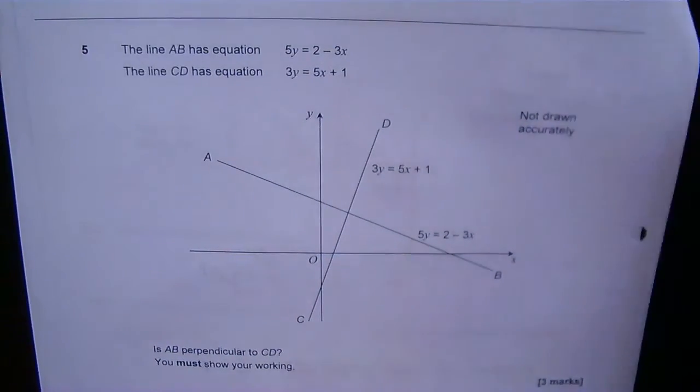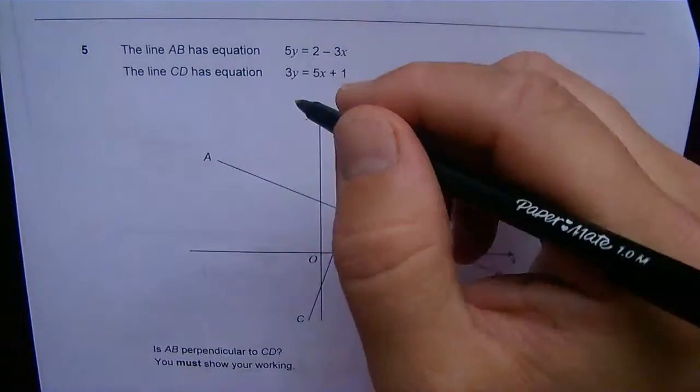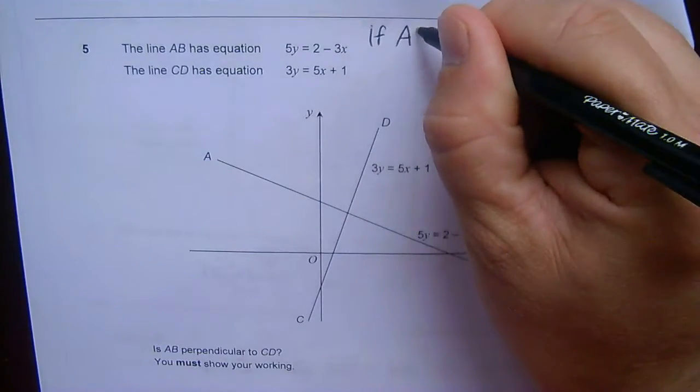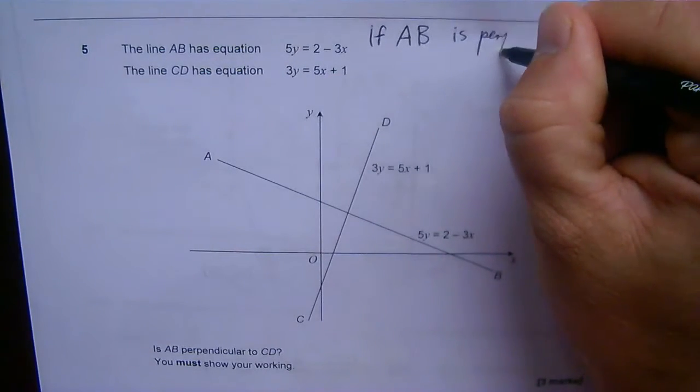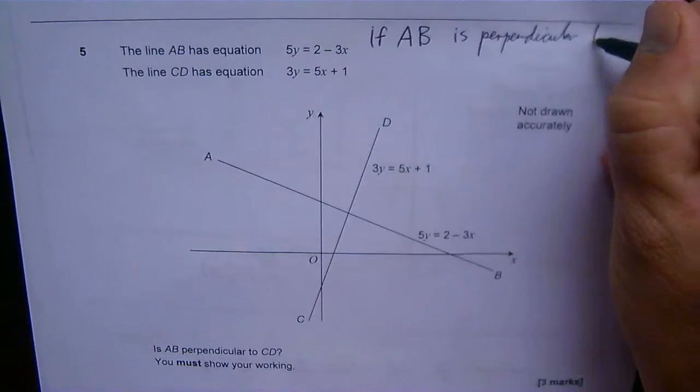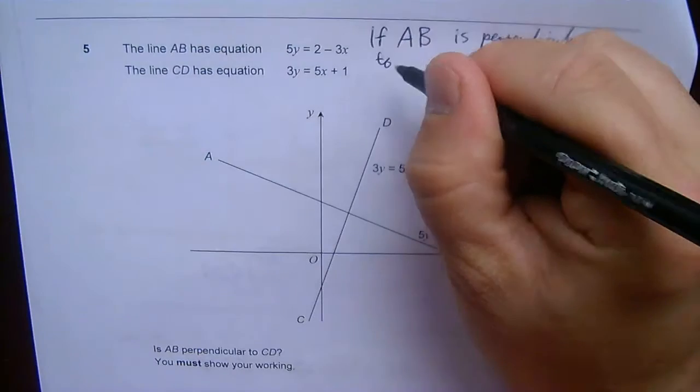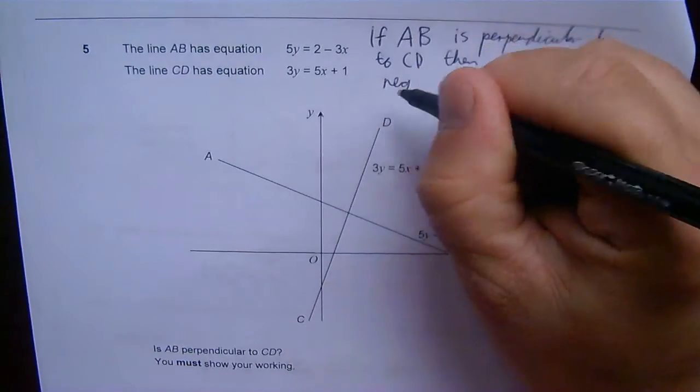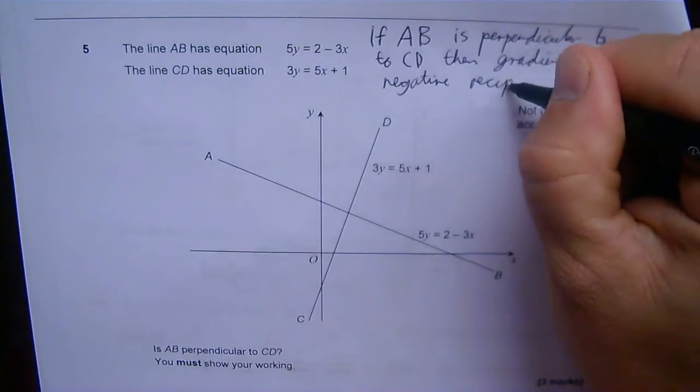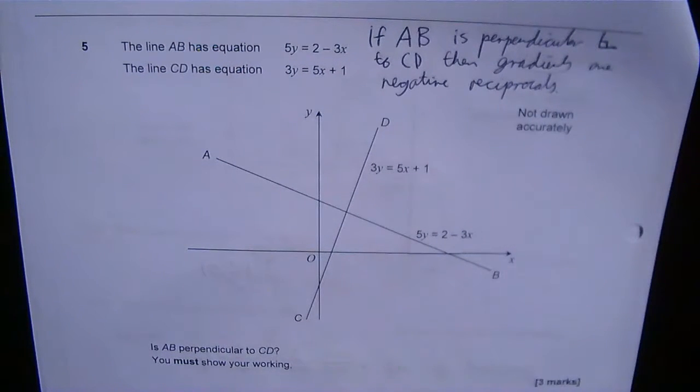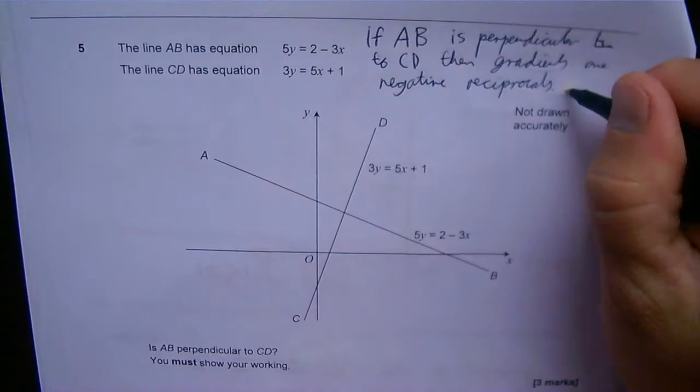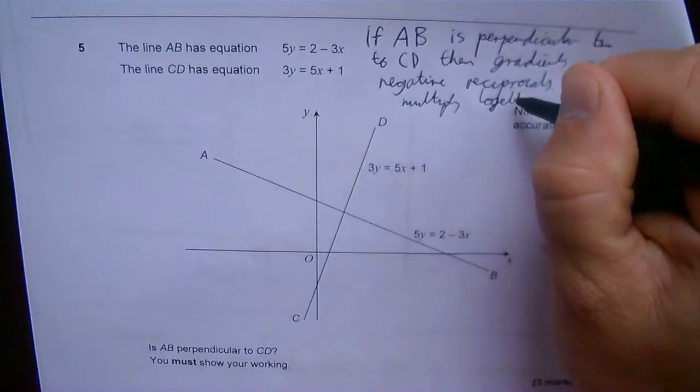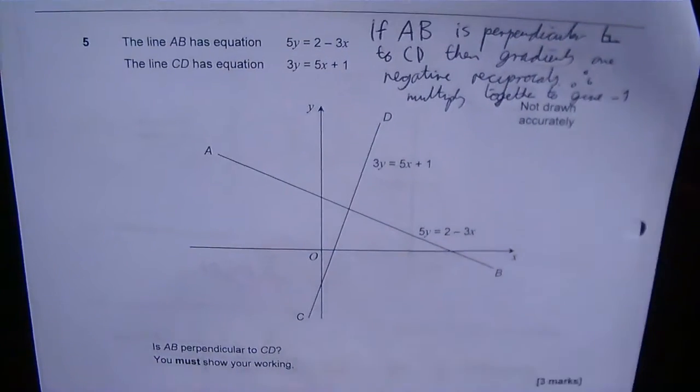If AB is perpendicular to CD, the gradients are negative reciprocals of one another. You could use a perpendicular symbol here. So that's what I have to prove—negative reciprocals. If things are negative reciprocals, they multiply together to give minus one.